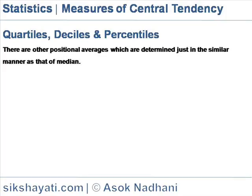Octiles divide a series into 8 equal parts and as such there can be 7 octiles, denoted by O1, O2, up to O7. Septiles divide a series into 7 equal parts and as such there can be 6 septiles, denoted by S1, S2, up to S6. Quintiles divide a series into 5 equal parts and as such there can be 4 quintiles, denoted by Q1 up to Q4. Hexiles similarly divide the series into 6 equal parts, so there can be 5 hexiles from H1, H2, up to H5.